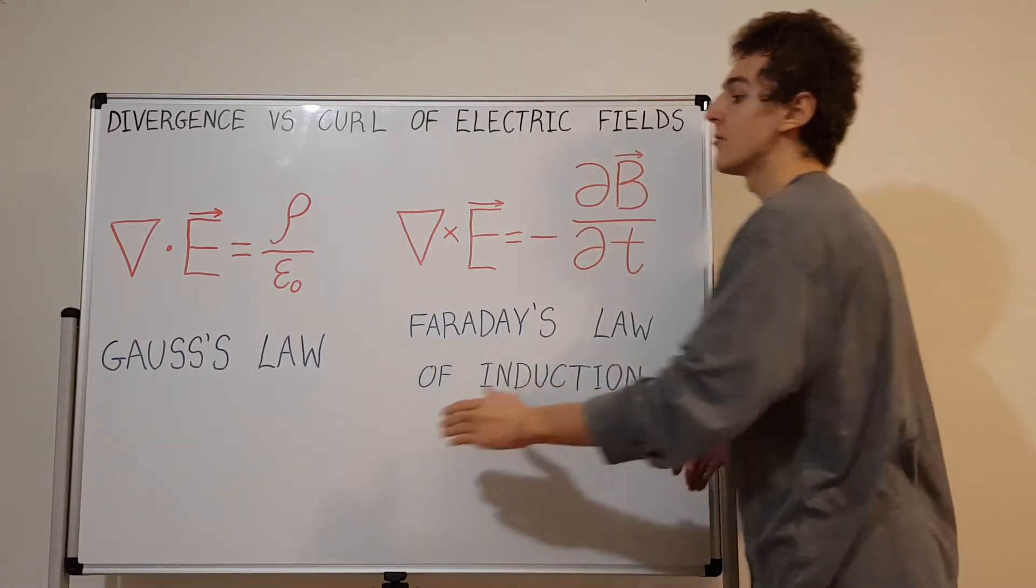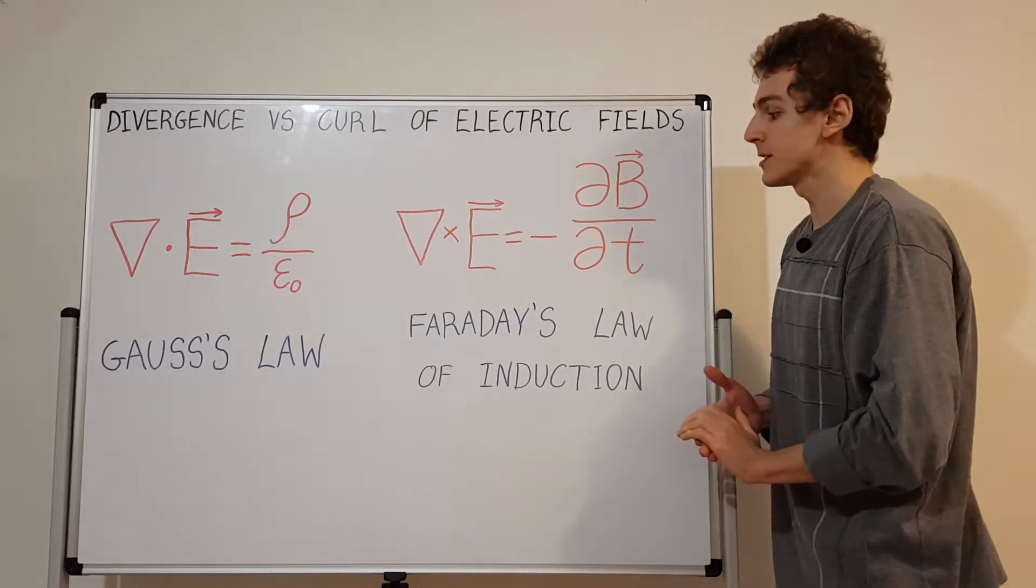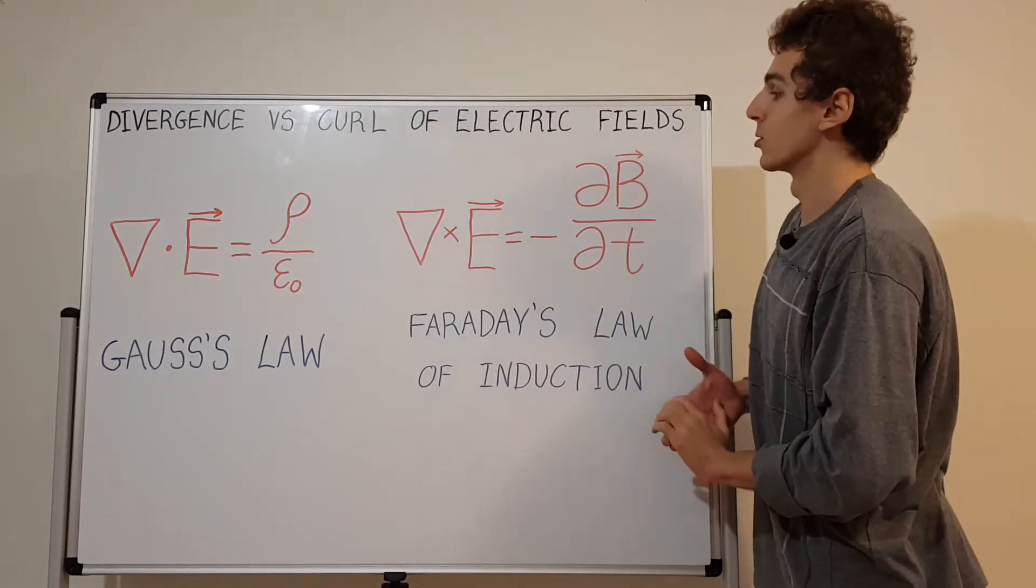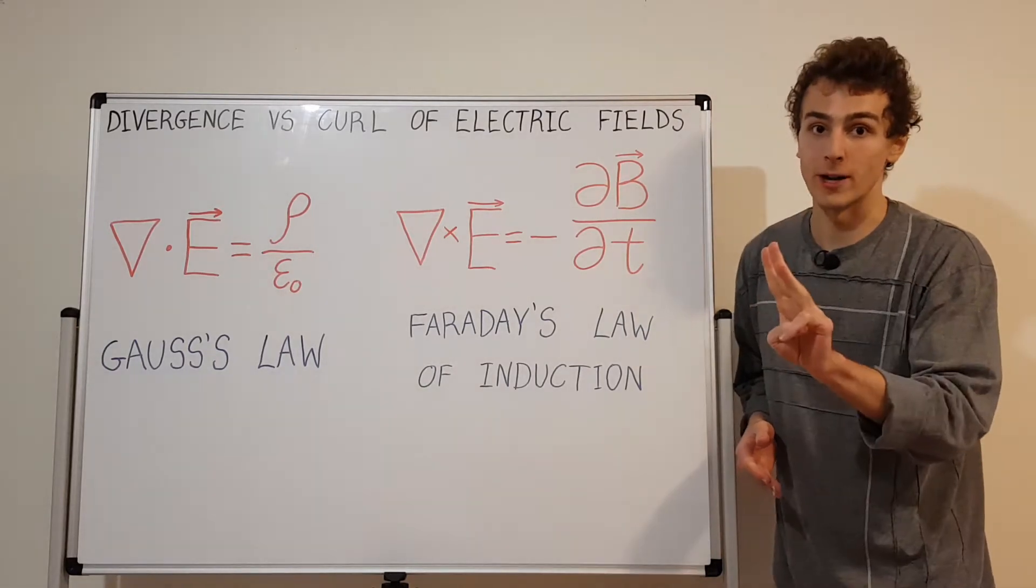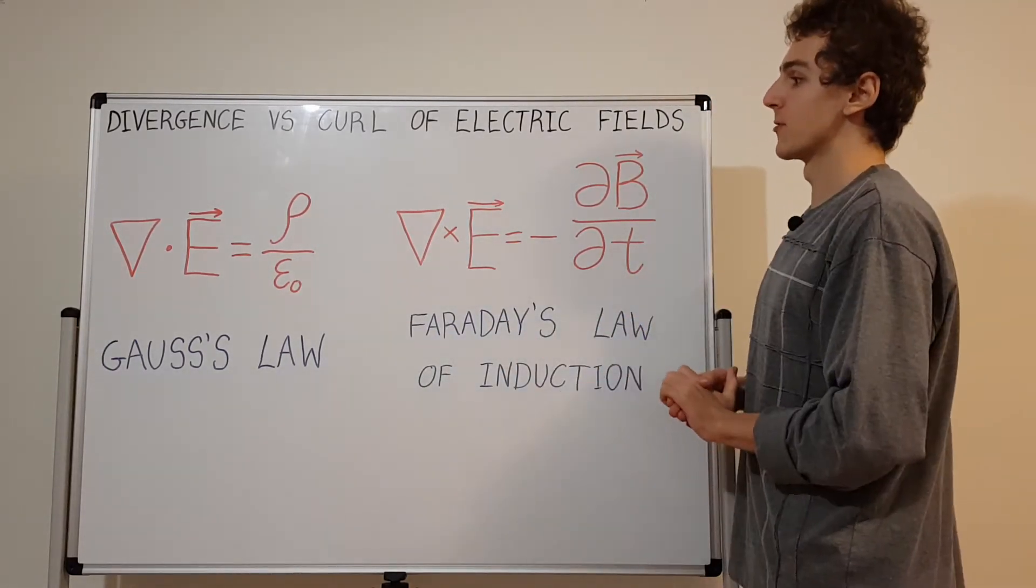On the left we have Gauss's law, this is usually listed as the first of Maxwell's equations. Then we have Faraday's law of induction, and that's usually listed as number three. We have number one and number three and they're concerned with the electric field.